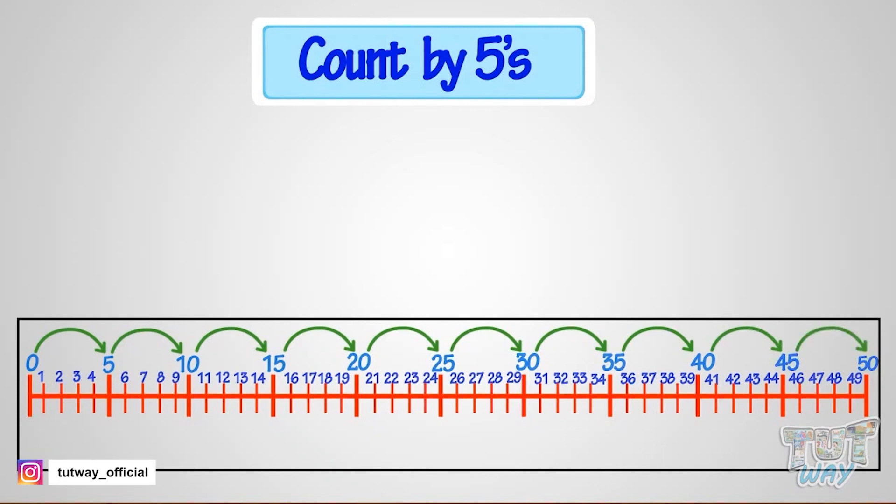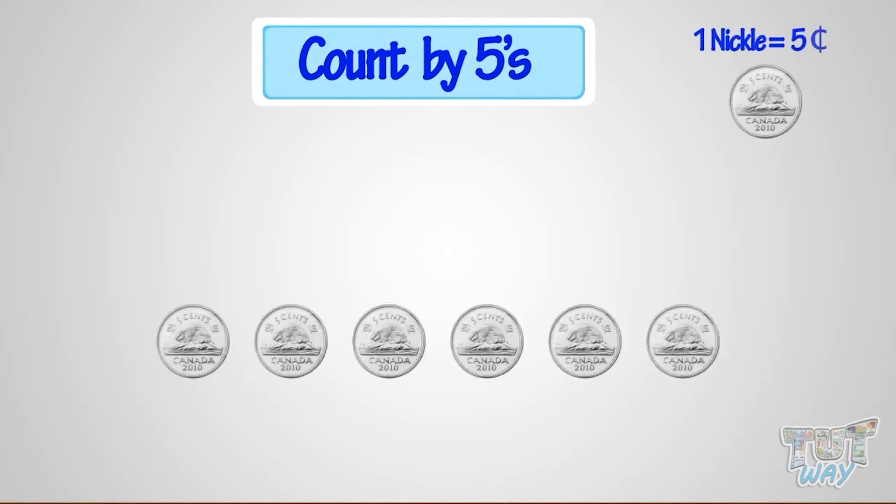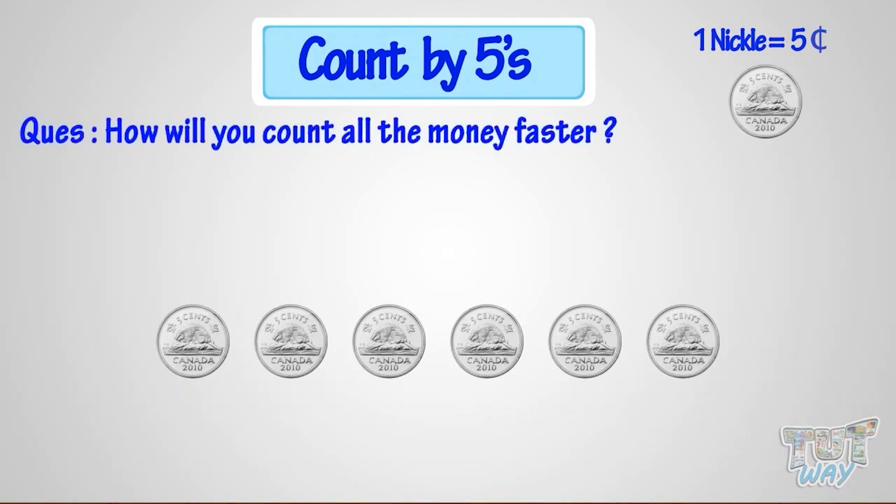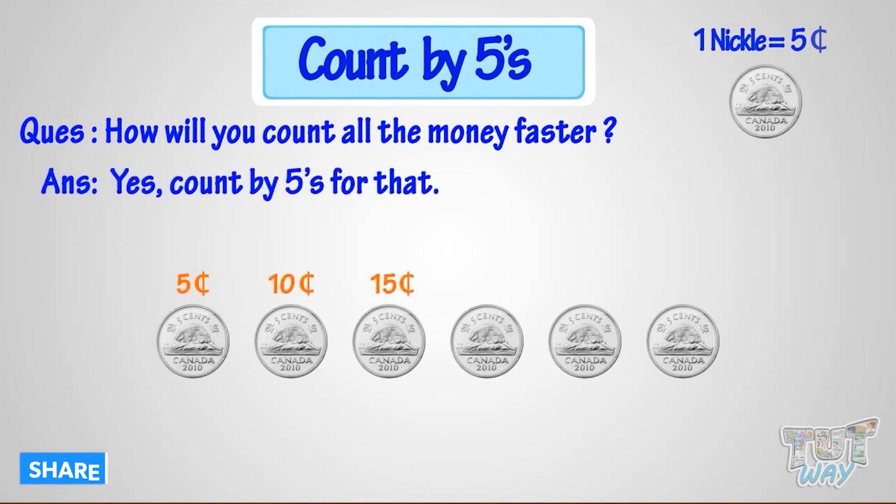We can count by fives. Now if I ask you to count the money where there are all nickels, so how will you count? Let's count with me. Five, ten, fifteen, twenty, twenty-five, thirty. So thirty cents are there. Isn't it faster? Good!